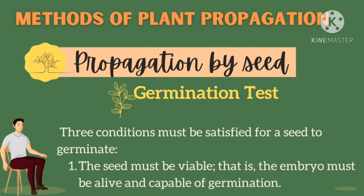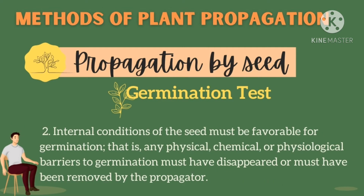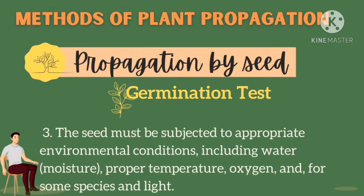There are three conditions that must be satisfied for a seed to germinate. First, the seed must be viable — the embryo must be alive and capable of germination. Number two, internal conditions of the seed must be favorable for germination; we have to remove all impediments in the embryo that may hinder growth. Number three, the seed must be subjected to appropriate environmental conditions, taking into consideration temperature, oxygen, other species like grass that may compete for nutrients, and lighting.